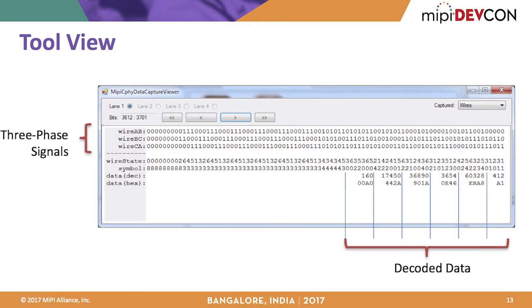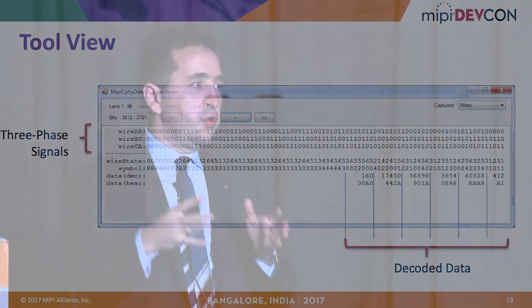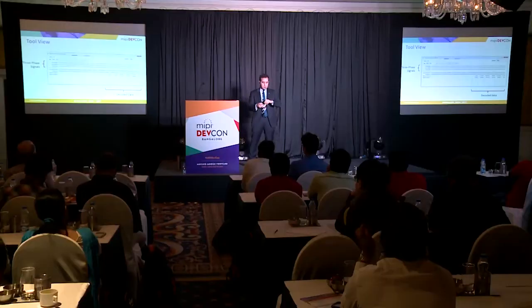From a tool perspective, you can see the three-phase signals in the time domain in CAD tools. These are generally not very meaningful on their own because they're always toggling and following the mapping and encoding state machine, but if you focus on the symbol transmissions in the output rows, you're able to quickly see what's going on in the link.